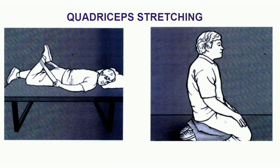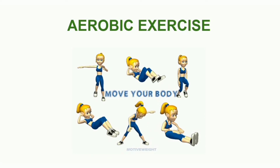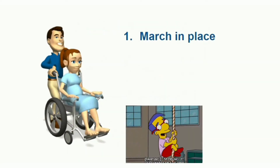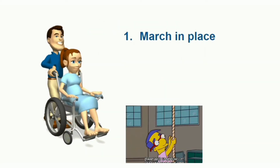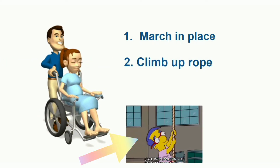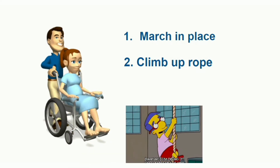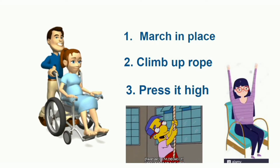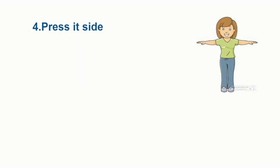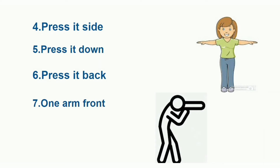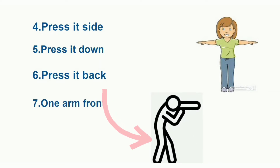After stretching exercises, the next active exercises are aerobic exercises. In a wheelchair, paraplegic patients can perform certain aerobic exercises. The first is marching in place using the upper extremities. As shown in the picture, they can climb up a rope using upper extremities. They can also do an upward press, side press, downward press, and backward press, as well as a one-arm forward punch repeated alternately.